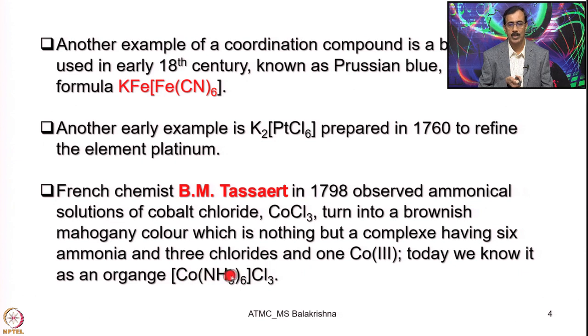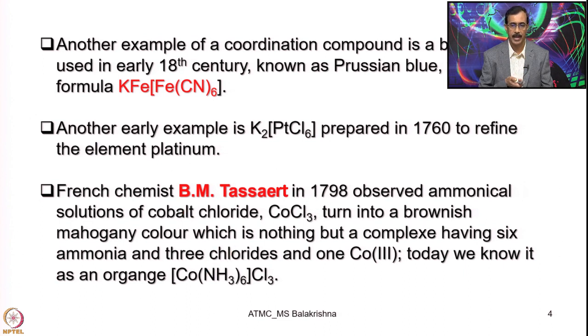Today we know that it is hexaminecobalt(III) chloride, with cobalt in the +3 state. This is the first cobalt complex, prepared by B.M. Tessart in 1798.